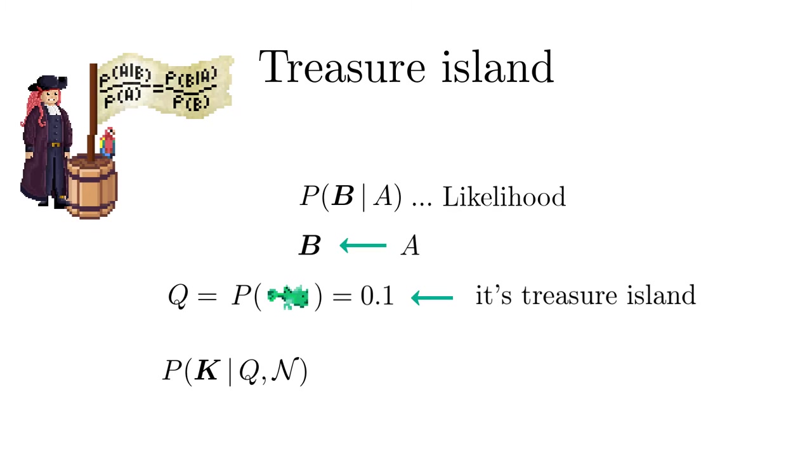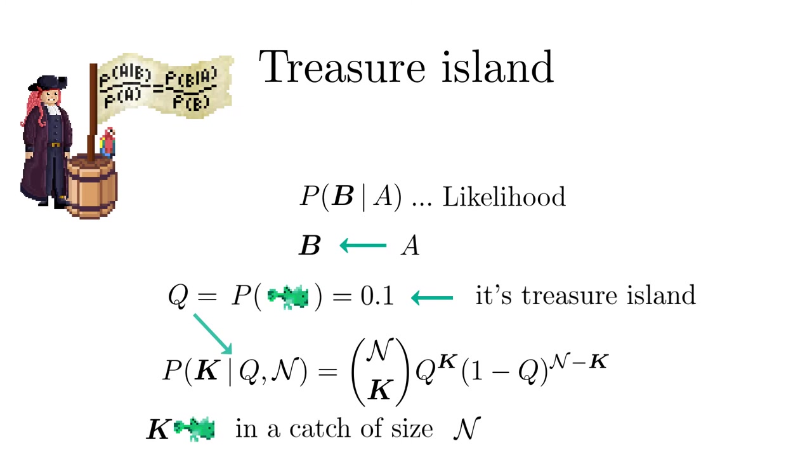It is given by the probability for k frogfish in a catch of size n and as such it is a binomial distribution. But we are interested in the inverse probability, the probability that this is a particular island given the number k frogfish in a catch of 100 fish in total.